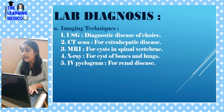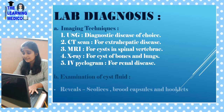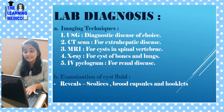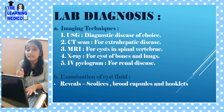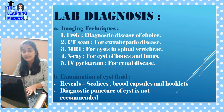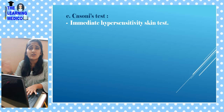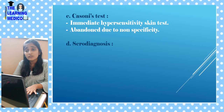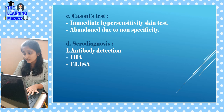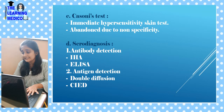Examination of the cystic fluid reveals scolices, brood capsules, and hooklets. Diagnostic puncture of the cyst is not recommended. The Casoni test is a hypersensitivity skin test but is not recommended due to non-specificity. Serology by antibody detection uses IHA and ELISA. Antigen detection uses double diffusion and CIE.